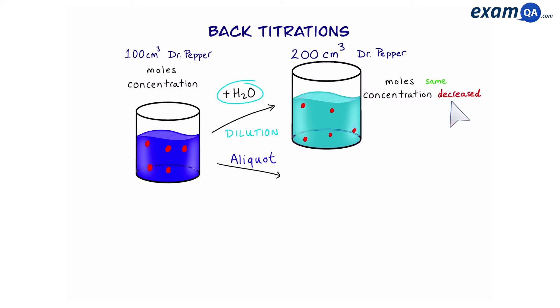The second thing we could do is take an aliquot, which means take a small sample. Let's say for example we take out 20 cm³ of Dr Pepper. Here the moles will have reduced because the small sample will have less particles compared to the original. However, because the volume is also smaller, that means the concentration remains the same.